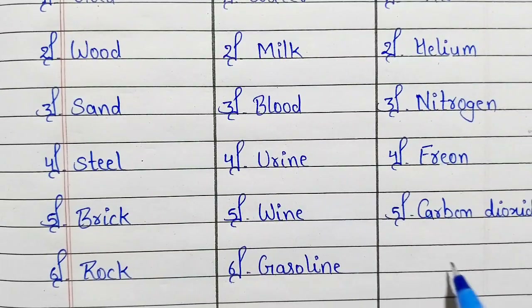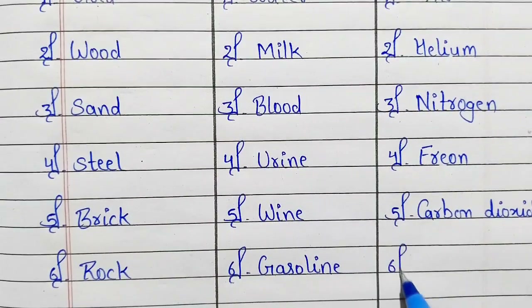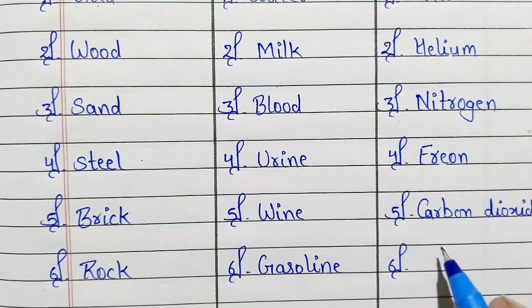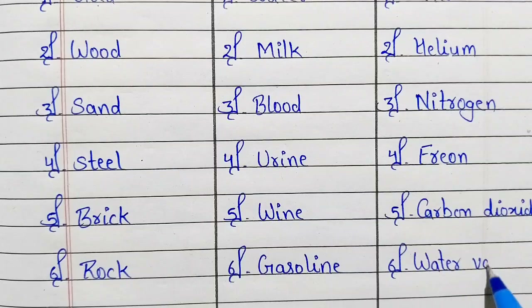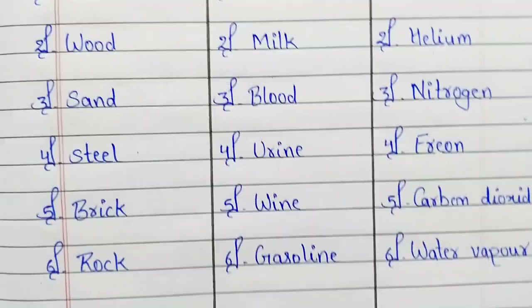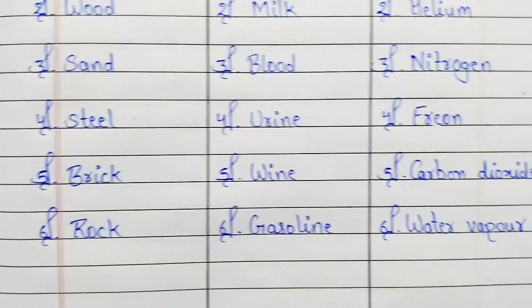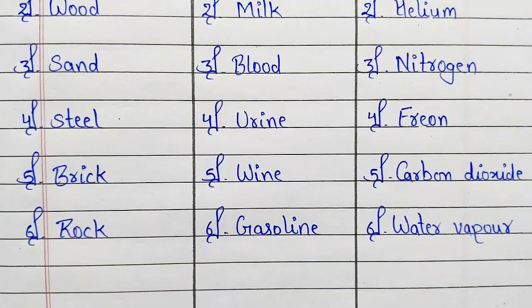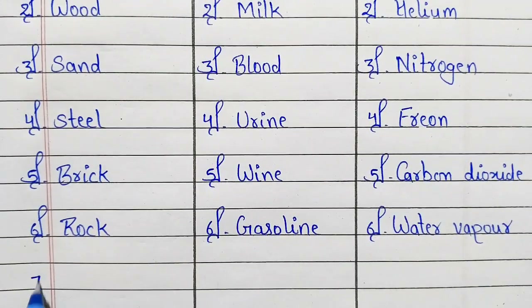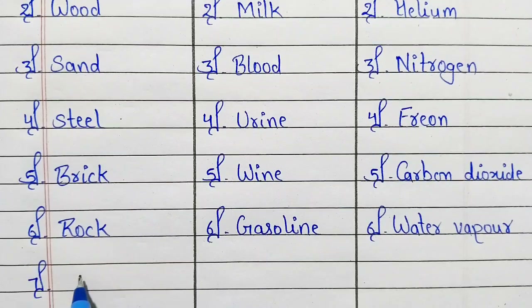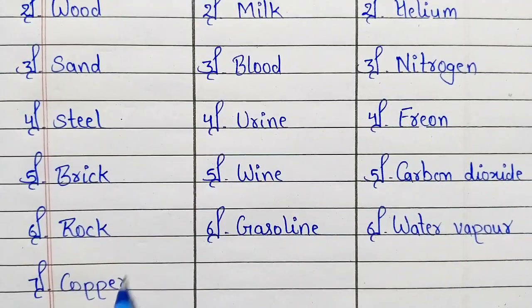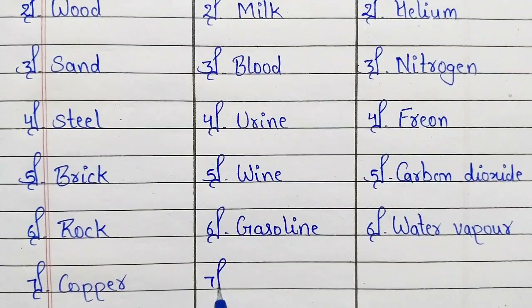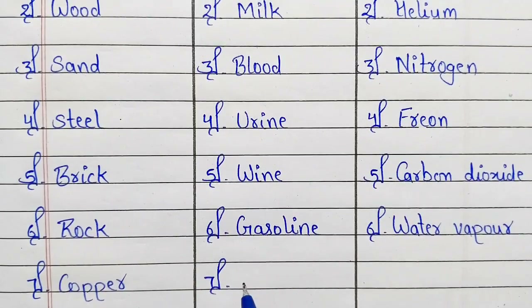Sixth number: liquid — gasoline. Sixth number: gas — water vapor. Seventh number: solid — copper.